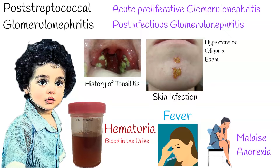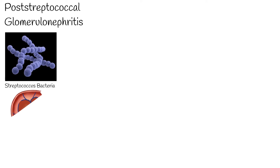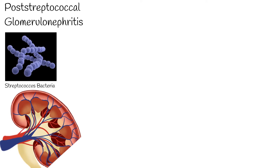Additional symptoms include hypertension, oliguria, and edema. Post-streptococcal glomerulonephritis can develop at any age, but is most common among children. The infection is caused by streptococcus bacteria, which causes blood vessels in the kidneys to develop inflammation, hampering the renal organs' ability to filter urine.